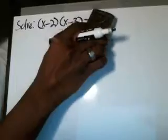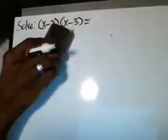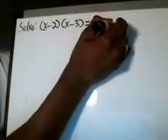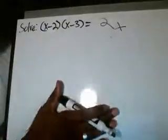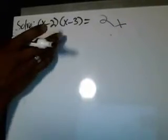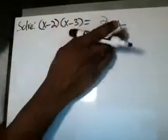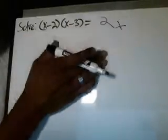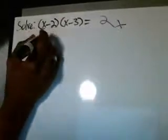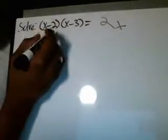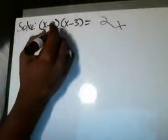Before you even do this, let's multiply this across. There's two ways of doing this. You could do it the other way, but that's a little more advanced. If you're a beginner, just multiply this across first, then make it equal to 0. So you have x minus 2 times x minus 3, and we multiply this across using FOIL or the other method I showed in another video.